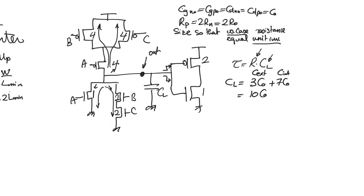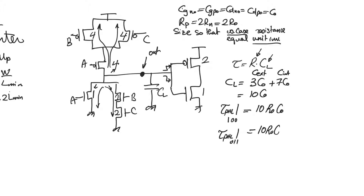For τ_P_high-low: if the input is 1,0,0 or 1,0,1 or 1,1,0 — any case where only branch A is active — transistor A is sized at 1, giving resistance R0, and the time constant is 10R0C0. If the input is 0,1,1, transistors B and C together give equivalent W/L = 1, resistance R0, and time constant 10R0C0.